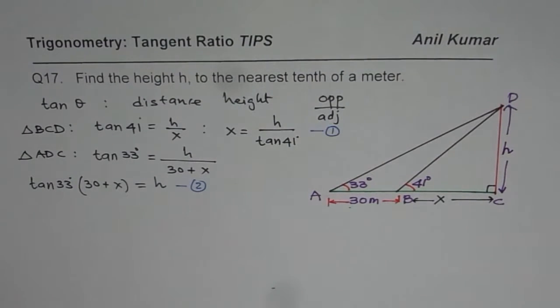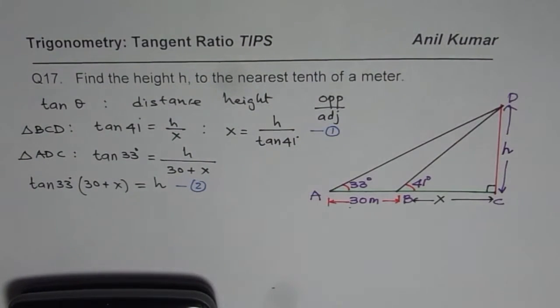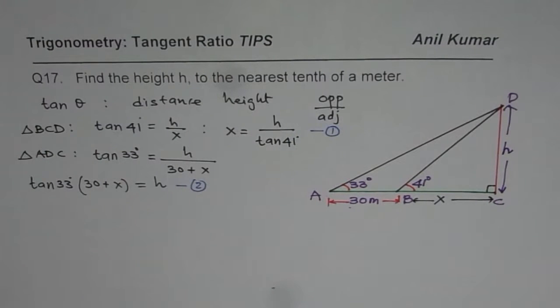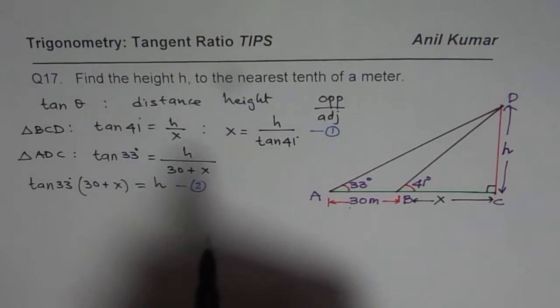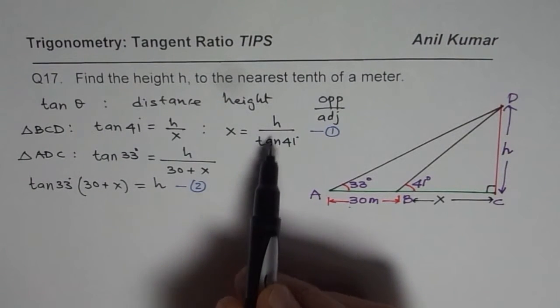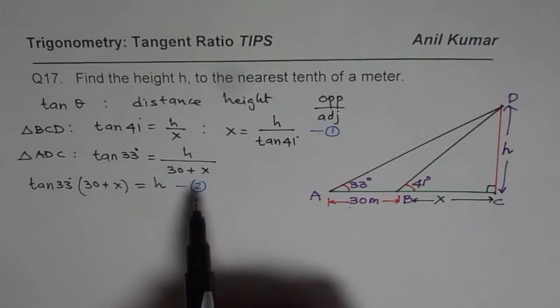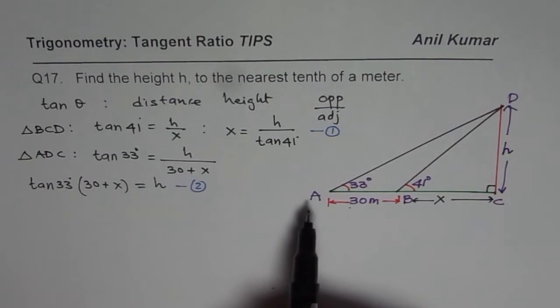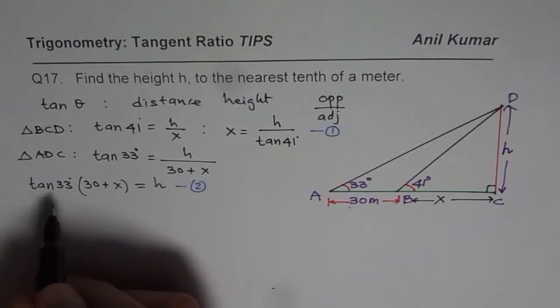So let us use the calculator, find what tan 33 is, write them in numbers basically. That will help us. Or at this stage, I will actually provide you with a general solution. I think that is better. So I will replace x with h/tan 41°. This general solution will help you solve this kind of equation in any given situation.